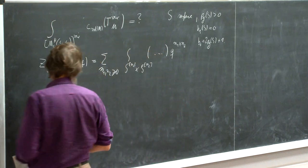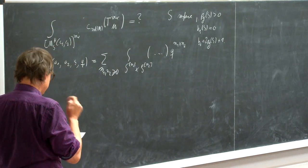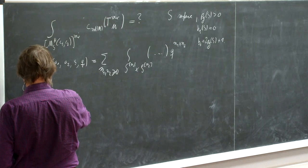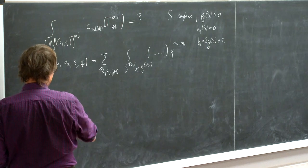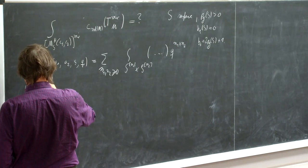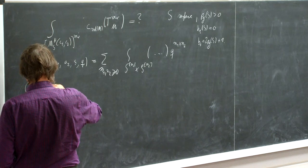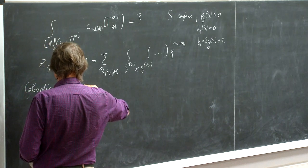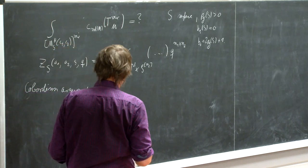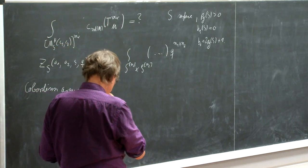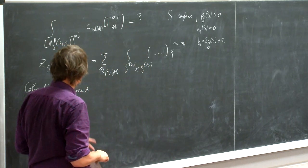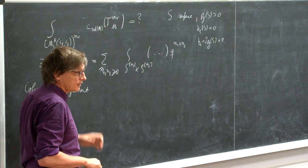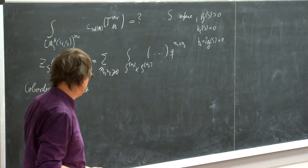And then we had applied, by a universality or cobordism argument, we had seen that it's enough to compute this in case S is a toric surface and A1, A2 are toric line bundles.